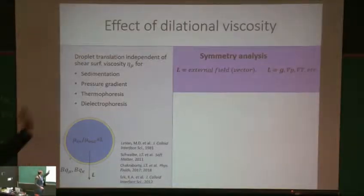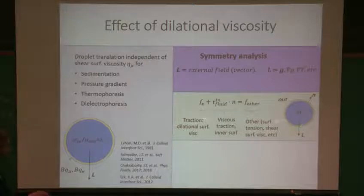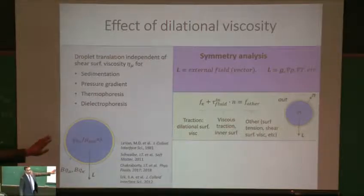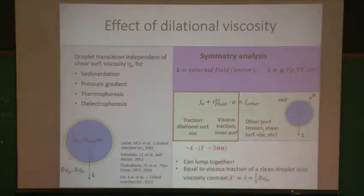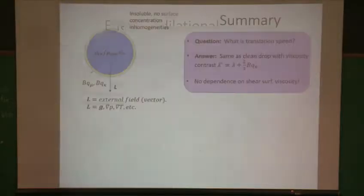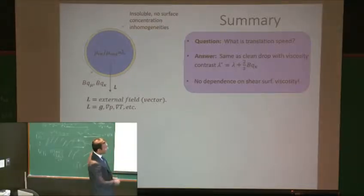You can do the same analysis to understand the effect of dilational viscosity on the motion. Looking at the force balance on the surface, the traction due to interfacial dilational viscosity plus the viscous traction on the inner surface equals the sum of all other tractions. Using the same symmetry analysis, these are force-free and scale like L·(I - 3NN), so they can be lumped together. With a few lines of algebra, the left-hand side is equivalent to the viscous traction of a clean droplet with a modified viscosity contrast. In summary, the translational speed of a droplet with interfacial viscosity is the same as a clean droplet with a modified viscosity contrast, with no dependence on interfacial shear viscosity.